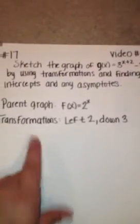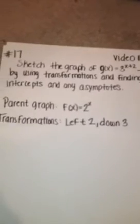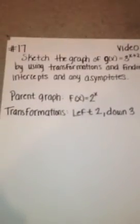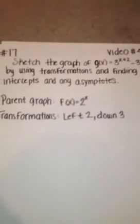by using transformations and finding intercepts and asymptotes. The parent graph is f(x) = 2^x. Transformations: left 2, down 3.